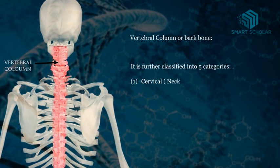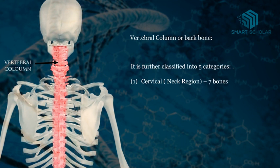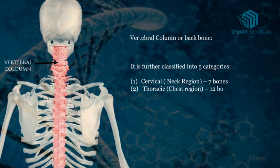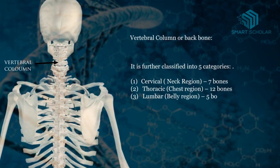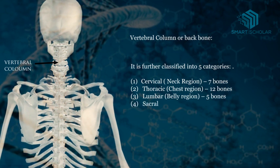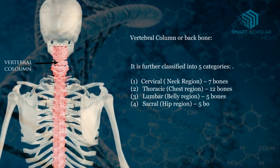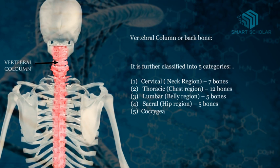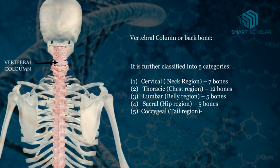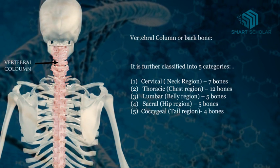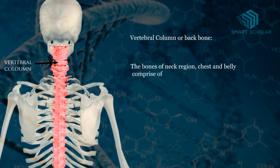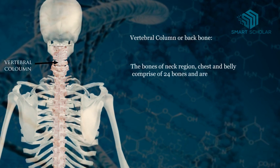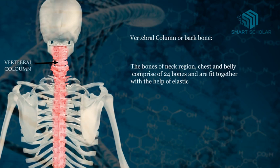The five categories are: Cervical, the neck region, which has 7 bones; Thoracic, the chest region, which has 12 bones; Lumbar, the belly region, which has 5 bones; and the coccyx region, the tail region, which consists of 4 bones. The bones of the neck region, chest and belly comprise 24 bones and are fit together with the help of elastic cartilage.